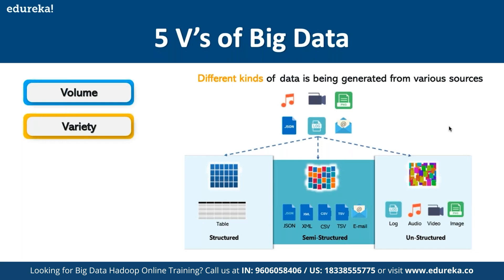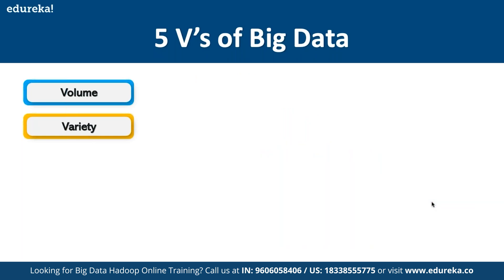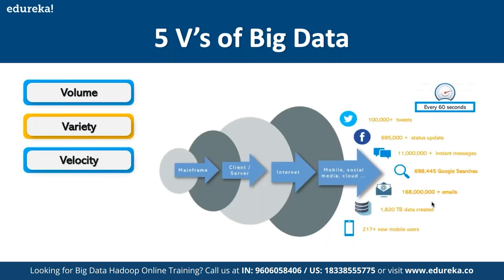In terms of structured data, we mean relational DBMS-based databases. For semi-structured data, we have emails, CSV files, JSON scripts, and XML files. Then unstructured data covers all the multimedia elements. The third V is Velocity — the rate at which data is currently being generated.